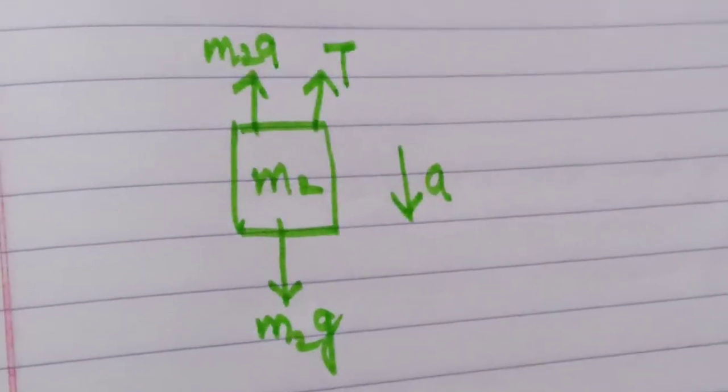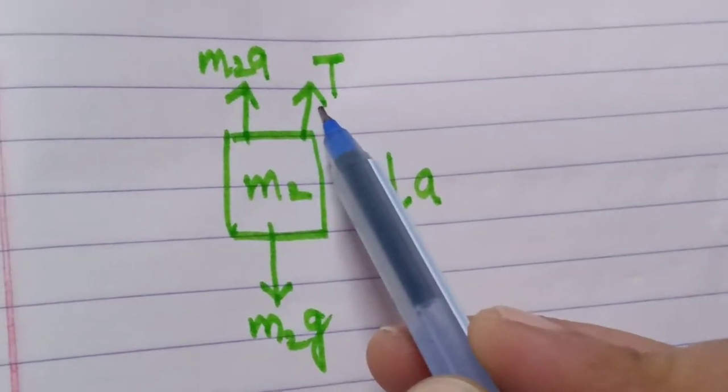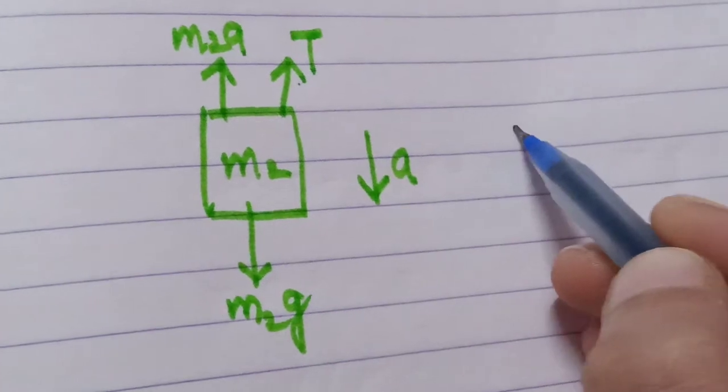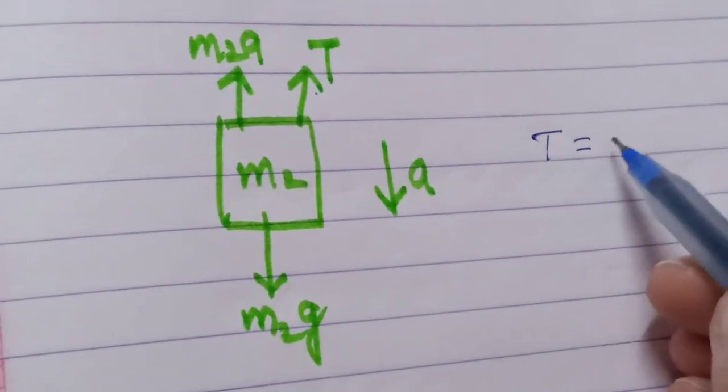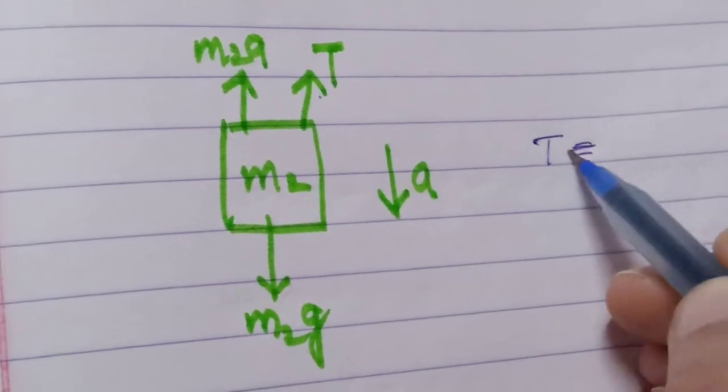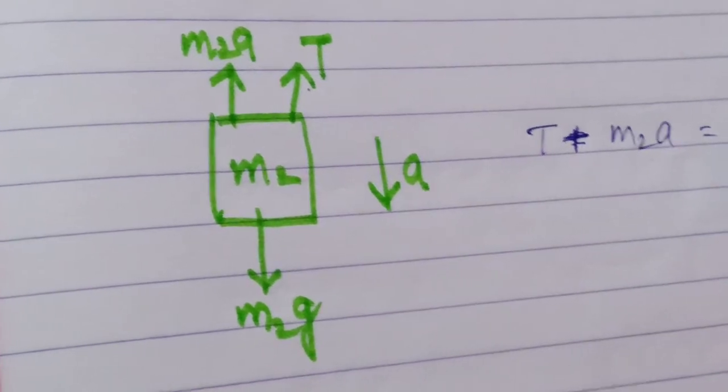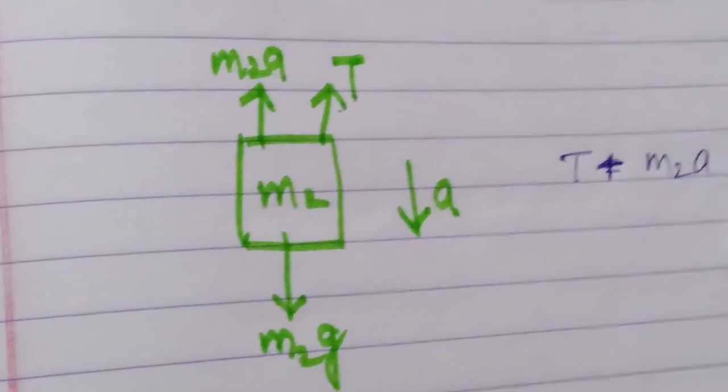m2 g, because T and m2 a are in the same side, so these are added like this. T plus m2 a is equal to m2 g. This is condition one. Now we will draw the FBD of m1.